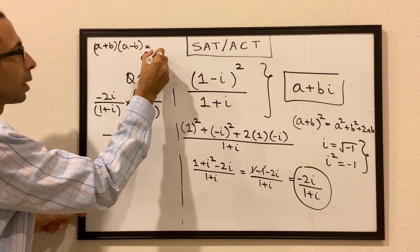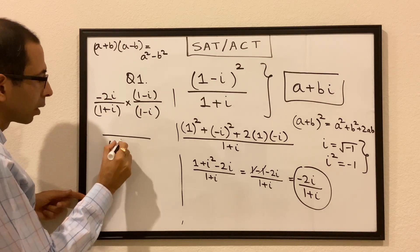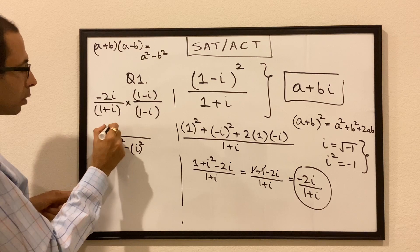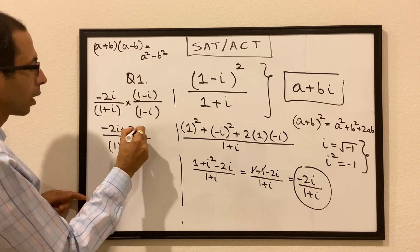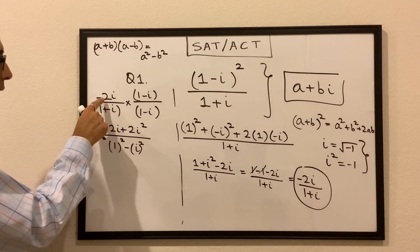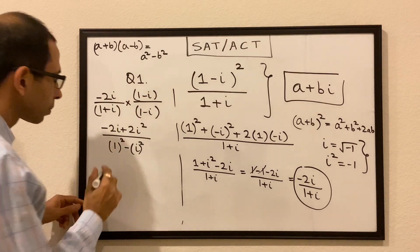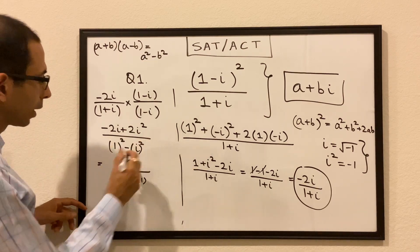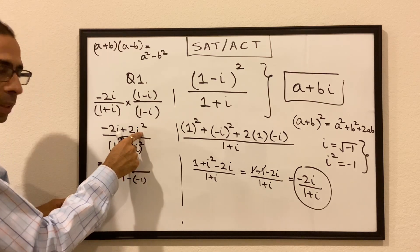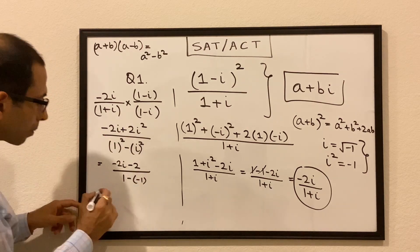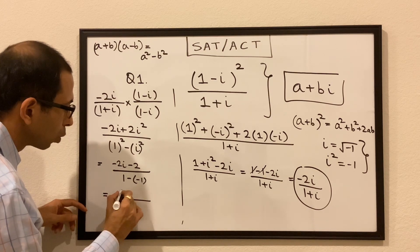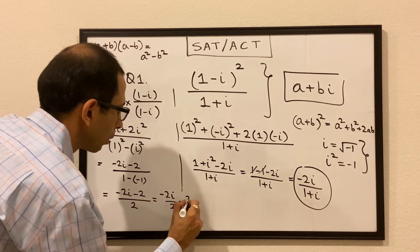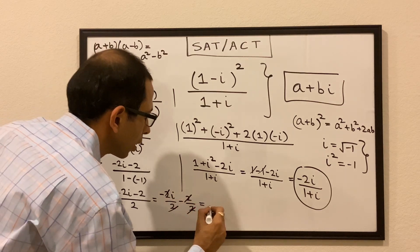The denominator (1 + i)(1 - i) is of the form (a + b)(a - b) = a² - b², giving us 1² - i² = 1 - (-1) = 2. For the numerator, using FOIL: -2i times 1 is -2i, and -2i times (-i) is +2i², which equals -2. So the numerator is -2i - 2, and dividing by 2 gives us -1 - i.